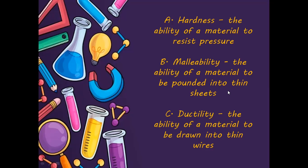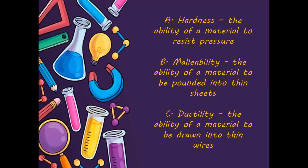Next is ductility — the ability of a material to be drawn into thin wires. An example is metal or kawad. Kawad has different sizes — manipis na manipis, yung pang bulaklak na manipis talaga, then meron din pang sampayan na makapal na kaya niyang mag-sustain ng bigat ng mga damit na sinasampay natin. So that is ductility — yung iron has the ability to become a thin or thick wire depending on the process.